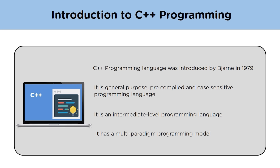C++ is called a pre-compiled language because it converts the source code directly to machine-understandable code. It is an intermediate-level language because it contains both features of high-level and low-level languages. C++ supports features of object-oriented languages like encapsulation, inheritance, polymorphism, etc. It also supports procedural programming and functional programming as well.